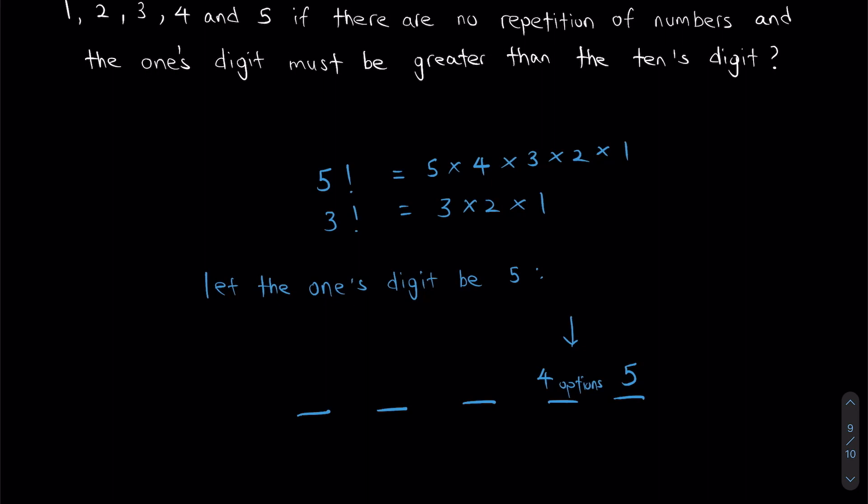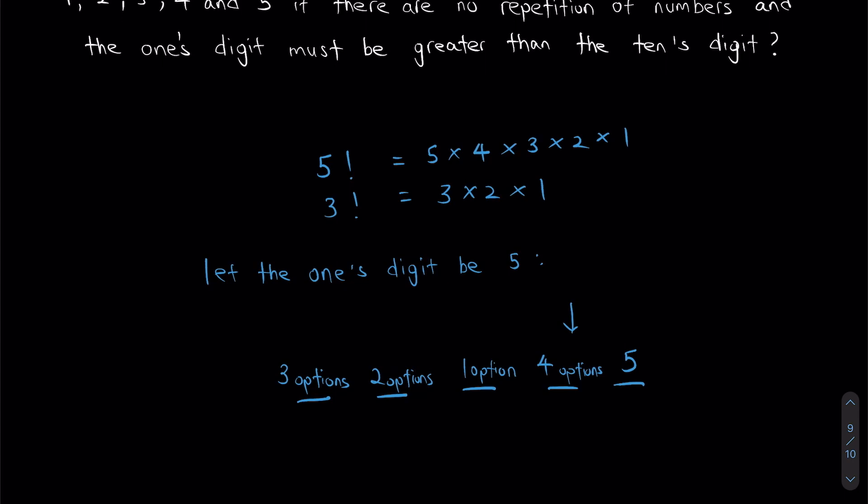gaps left and I have three numbers left. It will just be three options for the first space, two options for the second space, and one option for the last space.